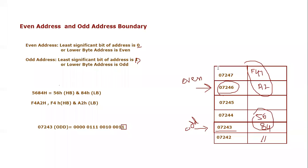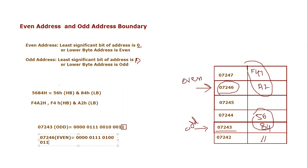Similarly, you can check 07246. It's clearly an even number. If you convert it into binary, 4 would be 0100 and 6 is 0110. So the least significant bit is 0, which confirms it is an even address.